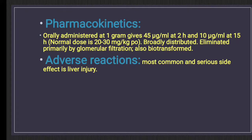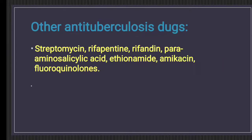The most common and serious adverse effect of pyrazinamide, similar to isoniazid, is hepatotoxicity. It can also cause hyperuricemia and is contraindicated in pregnancy. Other anti-tuberculosis drugs include streptomycin, rifapentine, rifandine — both of which are rifamycins — para-aminosalicylic acid, ethionamide, amikacin, and fluoroquinolones.